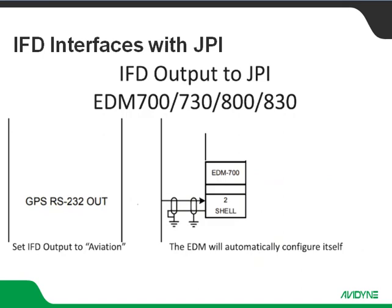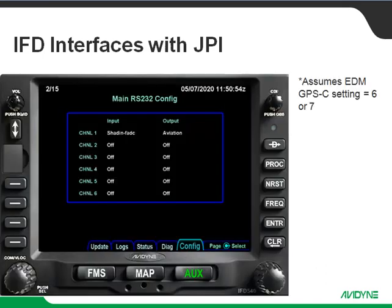If we look at the other end of this RS-232 — the transmit out of the IFD into the EDM-700, 730, 800, or 830 — those units are expecting a standard aviation output. They don't need to be configured as long as they're configured to accept GPS information; they're always going to be accepting aviation. Here's where we go in and set up these RS-232 ports. I chose Channel 1 for no particular reason — you can use any of these RS-232 channels the same way. We're assuming our EDM GPS-C setting is 6 or 7, so we would set up our input for Shaden FADC and our output for standard aviation.